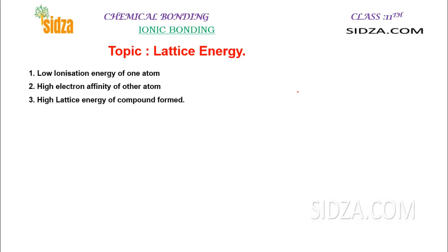Welcome to sitzot.com. In our last video, we learned that in an ionic bond formation there are three main steps — three main types of energies involved: ionization energy, electron affinity, and lattice energy. In this video we will discuss the third part, lattice energy. Before I start, let's have a quick revision. In an ionic bond formation there is a transfer of electrons — one atom loses an electron and the other gains it.